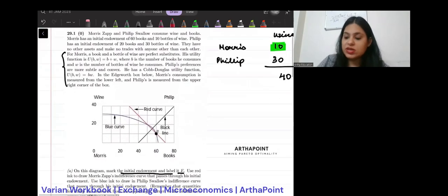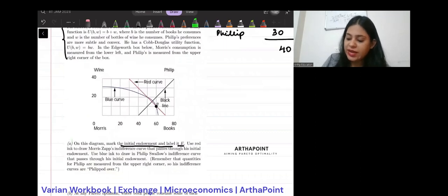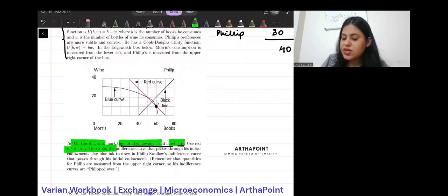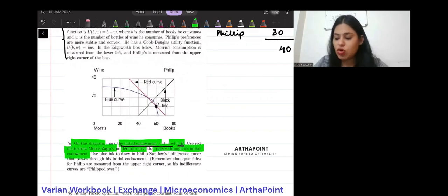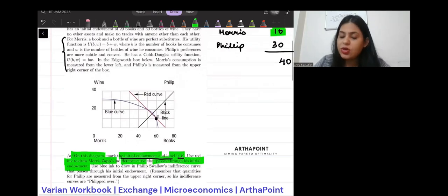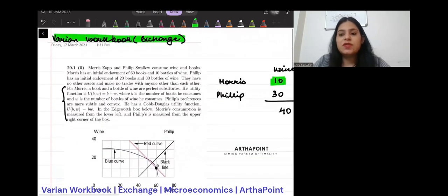We use red ink to draw Morris Zapp's indifference curve that passed through his initial endowment. We will just stop here and try to do this now. For drawing the indifference curve of Morris and Philip, I need to know their utility function.